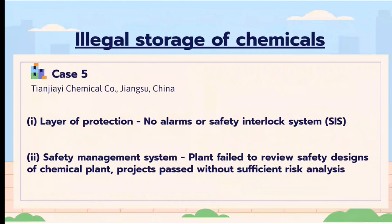The next category is illegal storage of chemicals, which involves Case 5. This resulted in an explosion due to self-combustion of the chemicals. In terms of layer of protection, there was no alarm or safety interlock system. For the safety management system, the plant failed to review the safety design of the chemical plant, and the project passed without sufficient risk analysis.